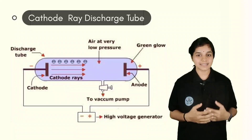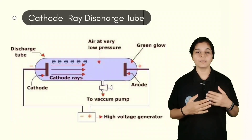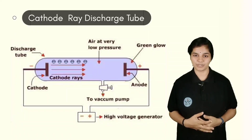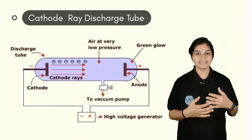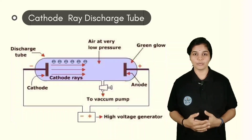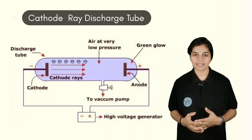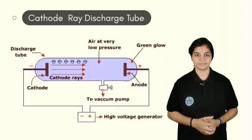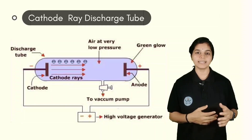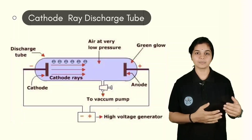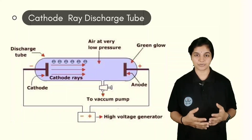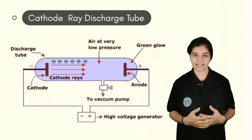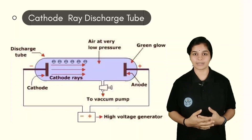The electric discharge was observed at low pressure of the gases and at high applied voltages. During this electric discharge, electricity would flow by the stream of particles traveling from cathode to the anode. These stream of particles that move from the negative electrode, i.e., cathode, to the positive electrode, i.e., anode, are the cathode rays.